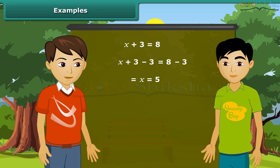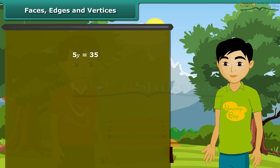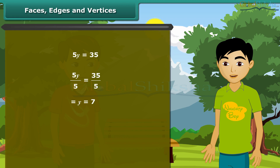We can check this by placing the answer in place of X. If the left hand side equals the right hand side, the answer is correct. We can see that LHS equals RHS, hence our answer is correct. Now take the equation 5Y = 35. To get just Y on the LHS, we divide both sides by 5. We get Y = 7.